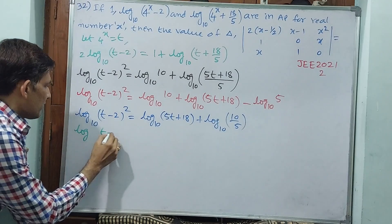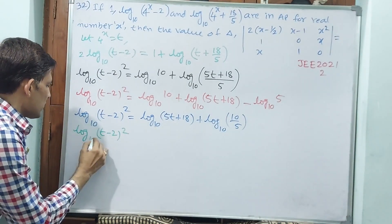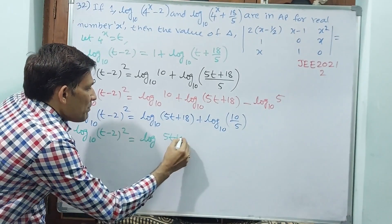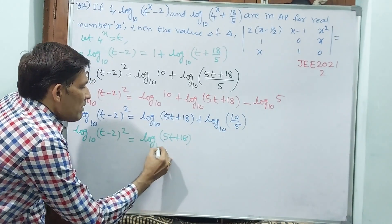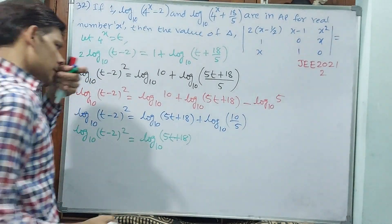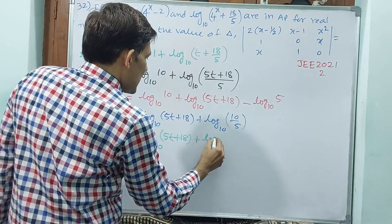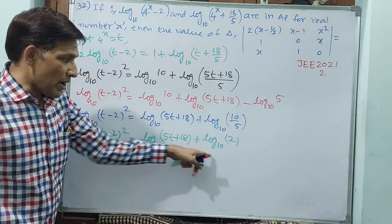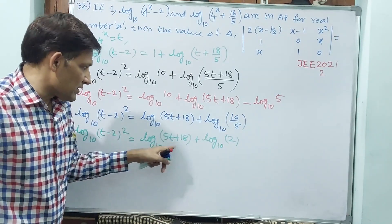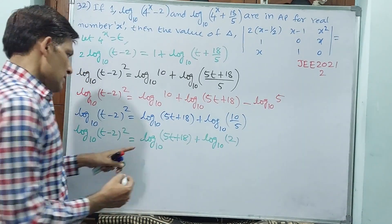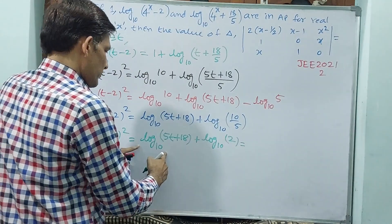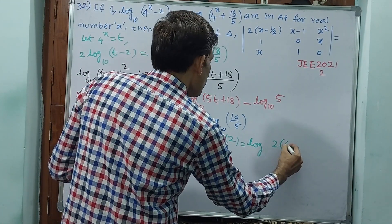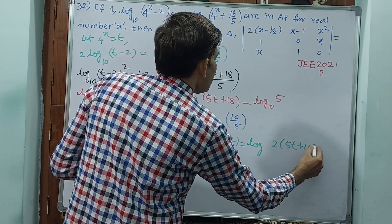Log of (t - 2)² to the base 10 is equal to log of (5t + 18)/10 to the base 10 plus log 2 to the base 10. Now see, addition is there, then you multiply these two. Two into, okay, I will write only RHS: log of 2 × (5t + 18) to the base 10. Is it correct? Only RHS I am talking about.